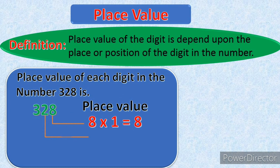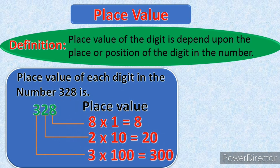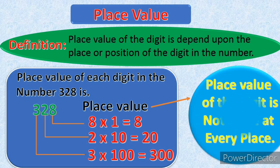Place value of 2 — 2 is at the 10's place, so 2 into 10 equals 20. Place value of 3 — 3 is at the 100's place, so 3 into 100 equals 300. We should remember one thing: place value of a digit is not the same at every place.